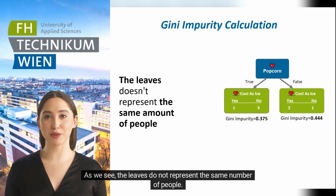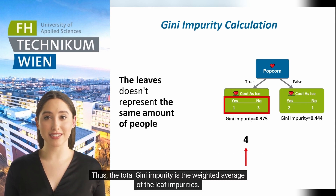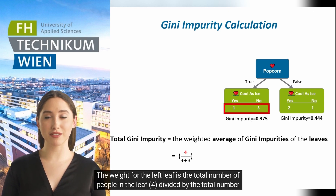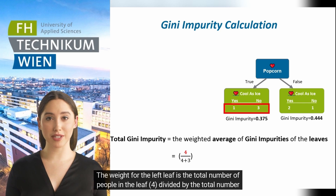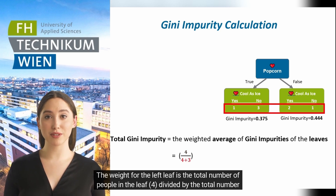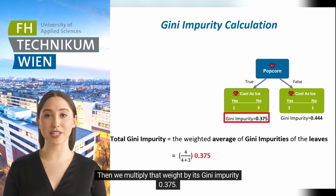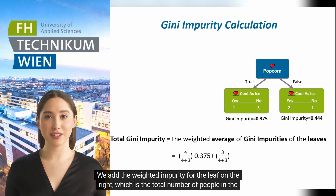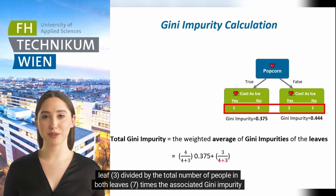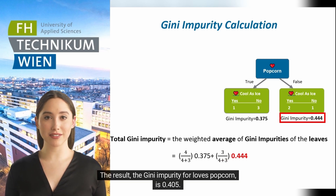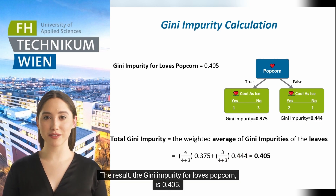As we see, the leaves do not represent the same number of people. Thus, the total Gini impurity is the weighted average of the leaf impurities. The weight for the left leaf is 4 divided by the total number of people in both leaves, 7, multiplied by its Gini impurity, 0.375. We add the weighted impurity for the right leaf: 3 divided by 7, times 0.444. The result — the Gini impurity for loves popcorn — is 0.405.